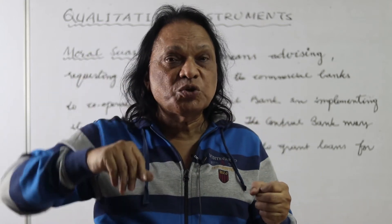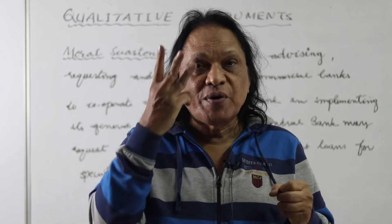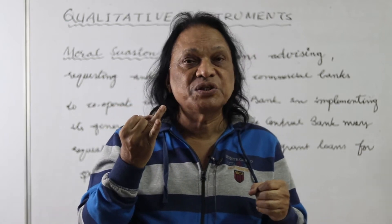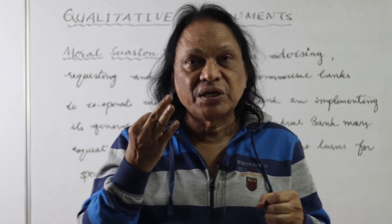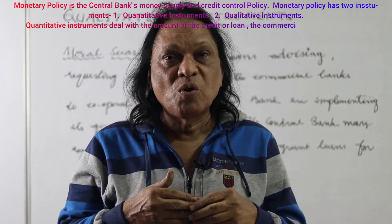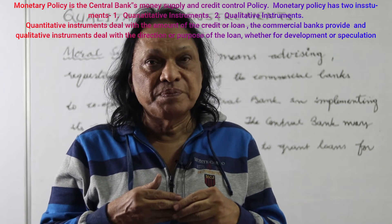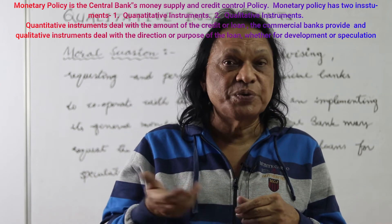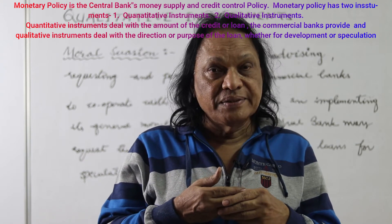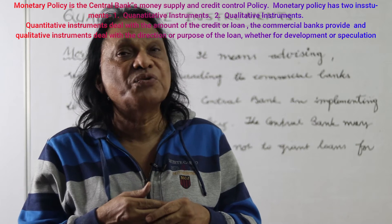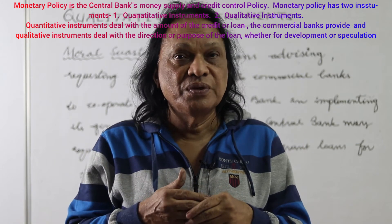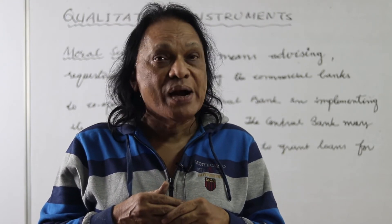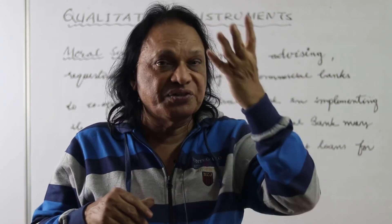Under quantitative instruments, we have already discussed three sub-instruments. First is bank rate — under bank rate you have repo rate, reverse repo rate, and interest rate. Second is varying reserve ratios, that is CRR and SLR. And the last one is open market operations. We have seen all these three instruments.